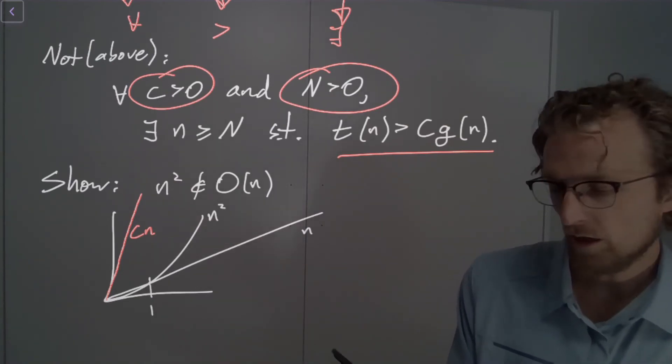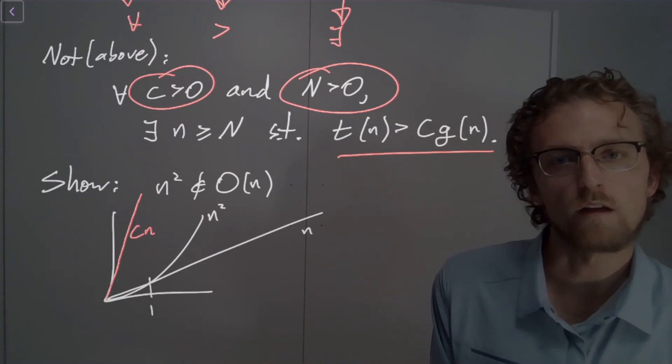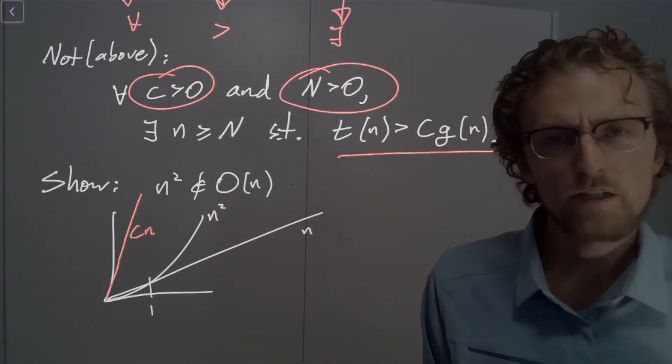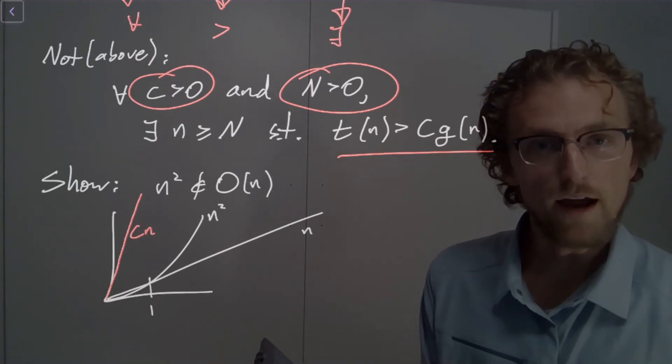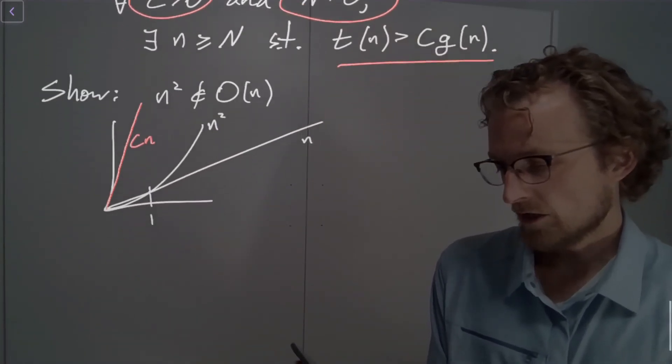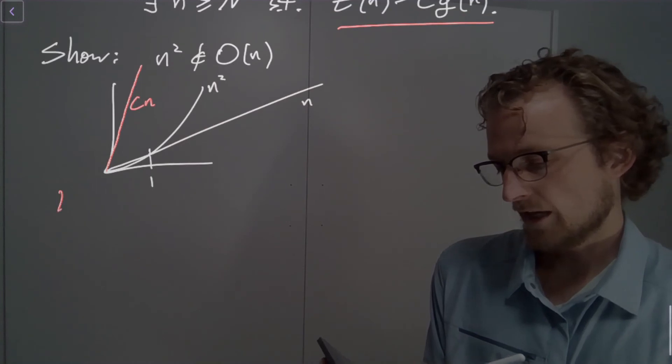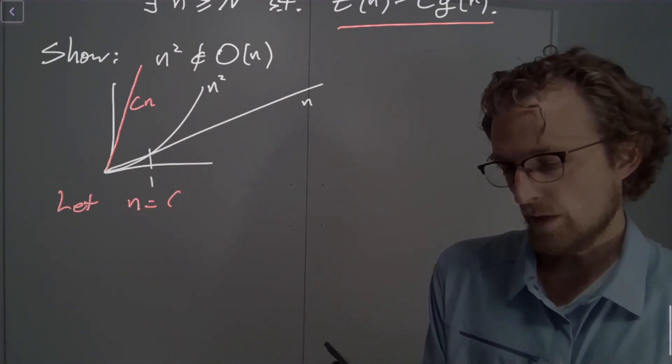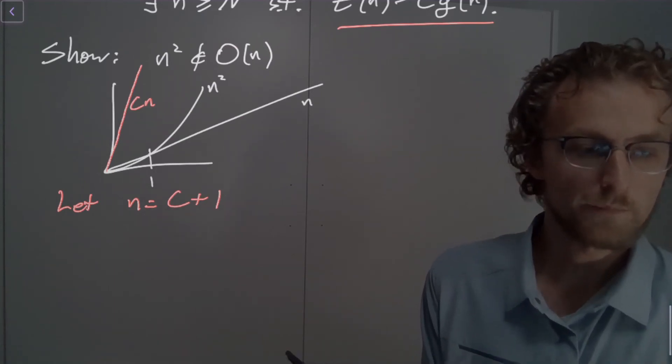Why do you think that N squared is not big O of N? And then what you would do is you would say, okay, I see your big huge number. Now let's just do this. I'm going to let N equal big C plus one. And to be very strict, we could say it's the ceiling of big C plus one, but I'm not going to get into those weeds too much.